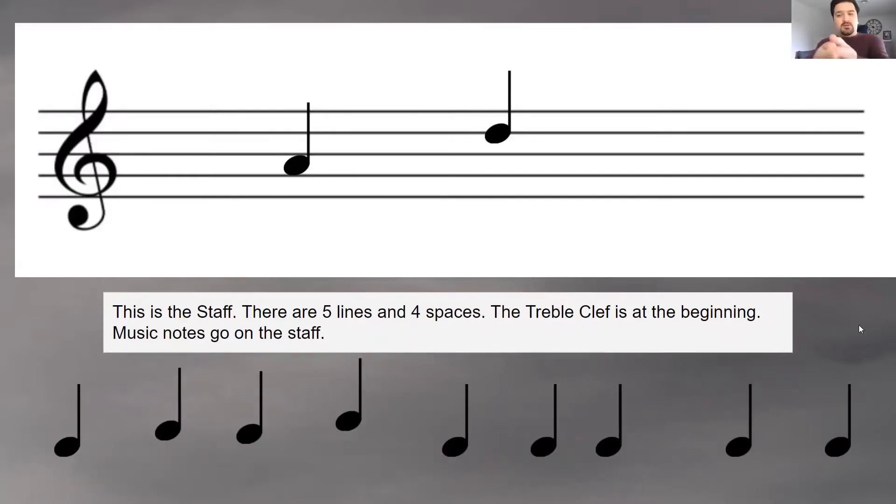So when you actually look at real music, it looks like this. This is the musical staff. There are five lines and there are four spaces. The treble clef is at the beginning and music notes go on the staff. So we can see here's line one, line two, line three, line four, and line five. And space one, space two, space three, and space four. And this thing over here on the left side that looks like an S or maybe a very fancy number six, that's called the treble clef. That's at the start of the music. So these notes, we have a note right here that's on the second space and we have a note up here that's on the fourth line. That's where the music goes.